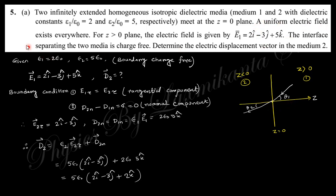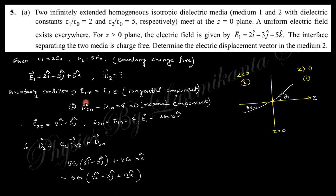A uniform electric field exists everywhere. For z greater than zero, the electric field is given as expressed. The interface separating the two media is free of charge — there is no free charge. Determine the displacement vector at medium two. You need to find the displacement vector at this medium. The boundary condition relating to the electric vector: the tangential component is continuous, and the normal component is discontinuous by surface charge. Since there is no free charge, this equals zero.